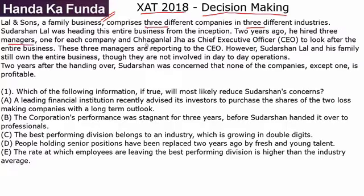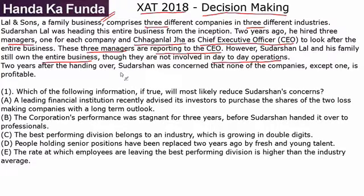Two years ago, Sudarshan hired three managers — one for each company — and Chagan Lal Jha as the CEO to look after the entire business. The three managers are reporting to the CEO. However, Sudarshan Lal and his family still own the entire business, though they are not involved in day-to-day operations.